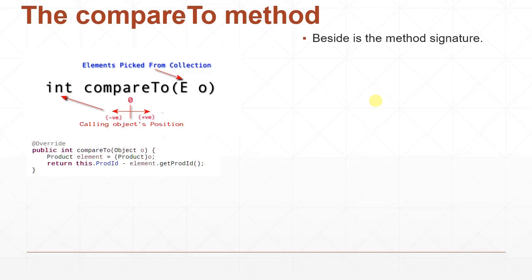The compareTo method should return an integer value. As already mentioned, Java will call this method, so supplying the parameter is taken care of by the Java framework. But what needs to be returned must be decided by us, because we are implementing this compareTo method. Even though Java supplies the parameter, we have to use that parameter and decide what integer to return. This compareTo method is for sorting the objects — to define the order, we implement this compareTo method.